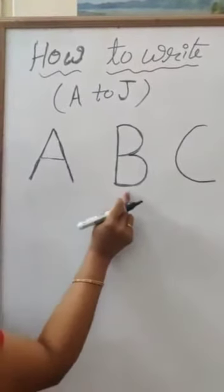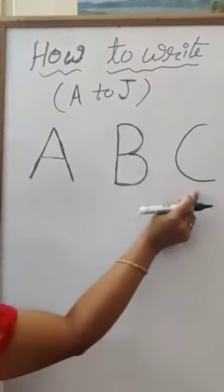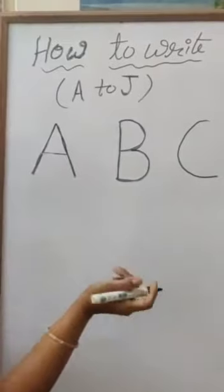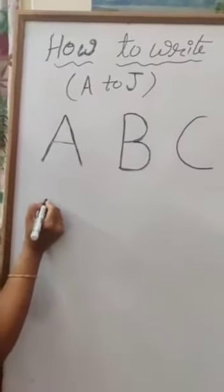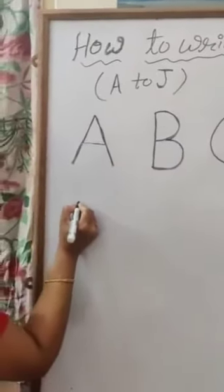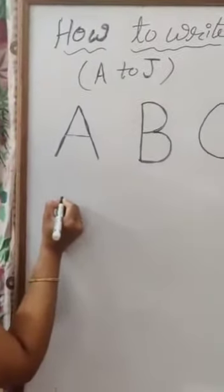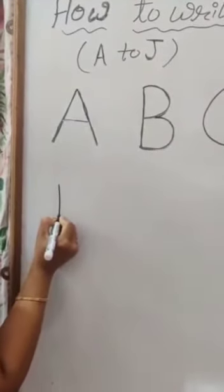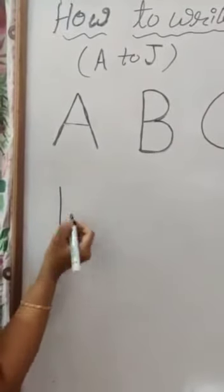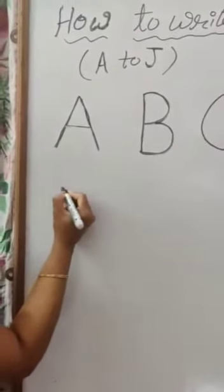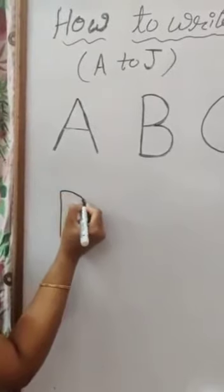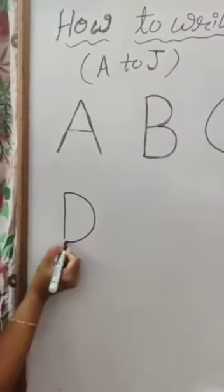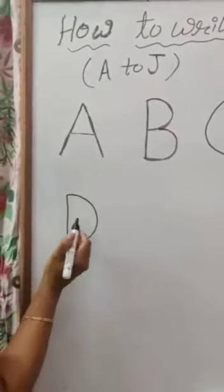A, B, C — and what comes after C? D. D for dinosaur: straight line or standing line and one half circle which makes D.